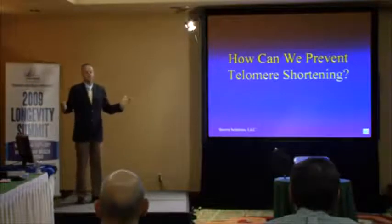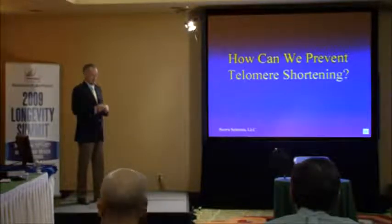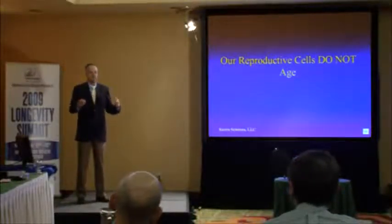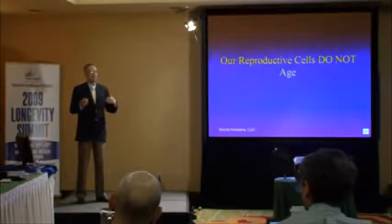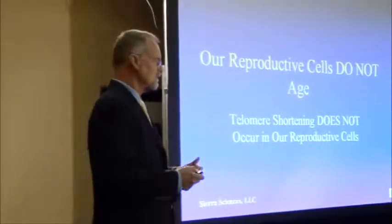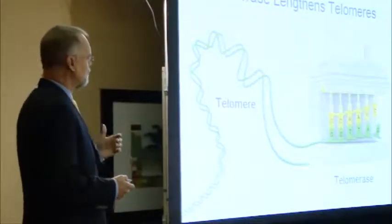So how can we prevent telomere shortening? This is what you can't do right now, but hopefully we can in the future — with one exception. Take into account the fact that our reproductive cells do not age. We know this because if we age because our cells age, and all of our cells aged, then our children should be born as old as we are — but they're born younger. So our reproductive cells aren't aging, and telomere shortening doesn't occur in our reproductive cells. This is due to the presence and production of an enzyme called telomerase, which we discovered at Geron Corporation.